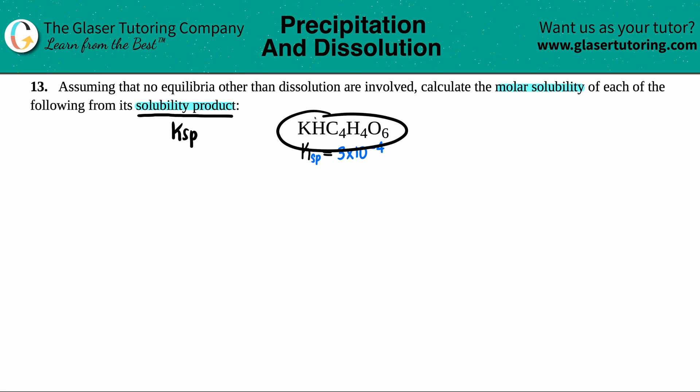If we're dealing with Ksps, that means that this compound is very slightly soluble, and only a little bit will break up into its ions, meaning that this will always start as a solid. So we have KHC4H4O6, and that's a solid.